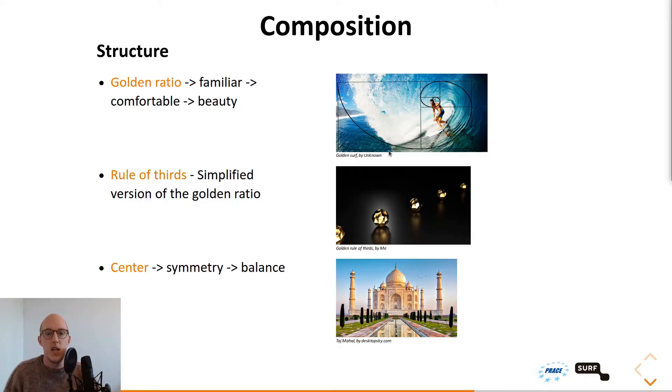And as you can see here in this surfer image, a wave is a very good representation of a golden ratio. Here the surfer's head is almost exactly on the converging point of the golden ratio, and the wave follows this golden ratio itself. So it guides you towards the surfer. And then you have a second structure, the rule of thirds, which is basically just a simplified version of the golden ratio. So it's easier to use, but it still has the comfortableness and the familiarity of this golden ratio, but it's easier to apply.